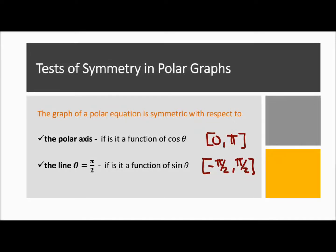Coming back again to tests of symmetry in a polar graph. The graph of a polar equation is symmetric with respect to the polar axis if it's cosine, and it's going to be symmetric with respect to the line θ = π/2 if it's a function of sine. We're going to use 0 to π for entering our table values for cosine, and then from −π/2 to π/2 for sine of θ.